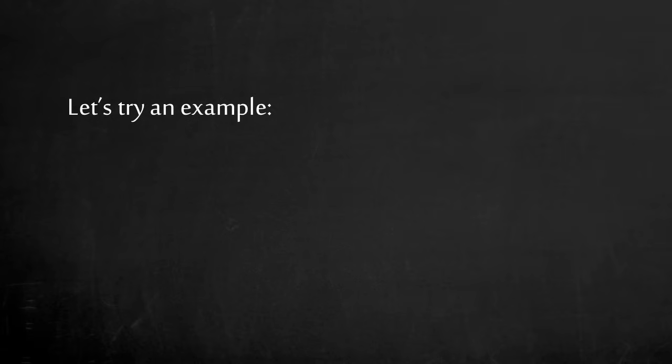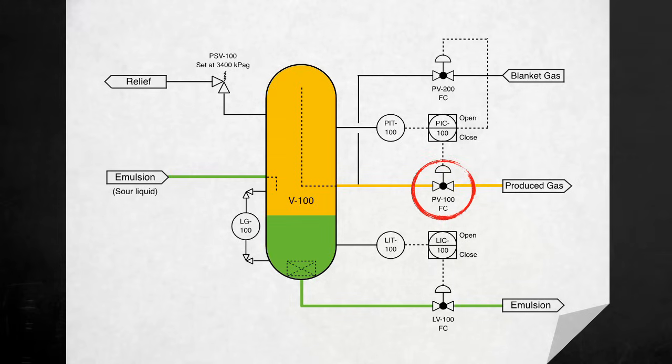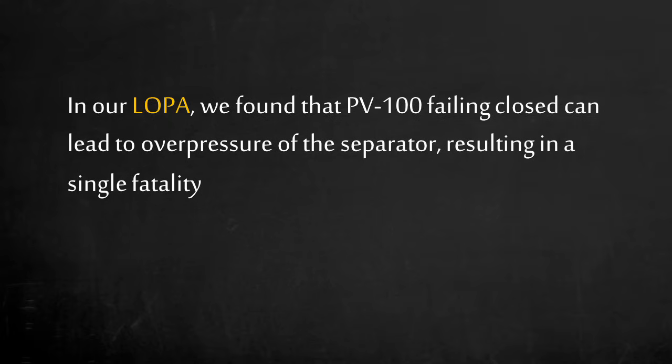Let's try an example. In this example from the HAZOP and LOPA crash courses, we have a separator vessel with product coming in as a motion. This vessel has a pressure control loop and a level control loop. This vessel has a maximum allowable working pressure slightly above the pressure safety valve set point at 3400 kPaG. What is the worst credible scenario if PV100 were to fail in the closed position? From our LOPA, we found that the vessel can overpressure if PV100 failed closed and it can result in a single fatality.